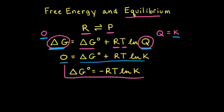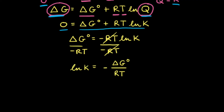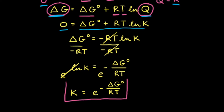This equation is extremely useful because now we have a relationship between free energy and equilibrium. If we know the standard change in free energy for a particular reaction at a particular temperature, we can calculate the equilibrium constant for that reaction. To solve for K, we divide both sides by negative RT, so negative RT cancels out. We can rewrite it as natural log of K equals negative delta G naught divided by RT. Taking E to both sides gives us K equals E to the negative delta G naught divided by RT.